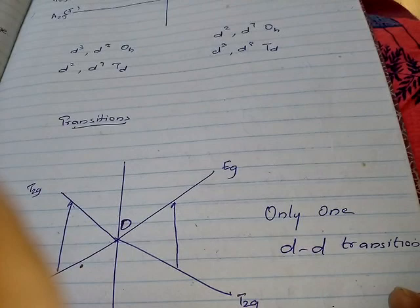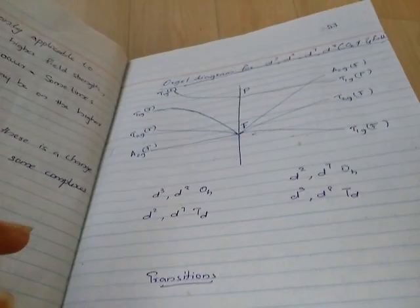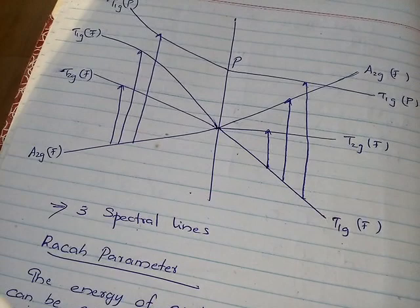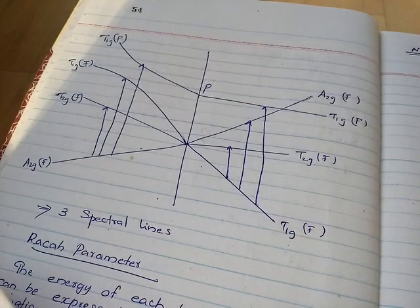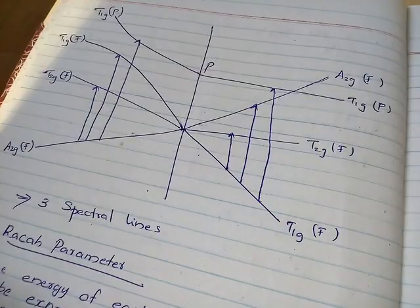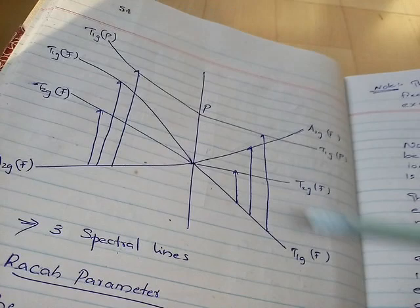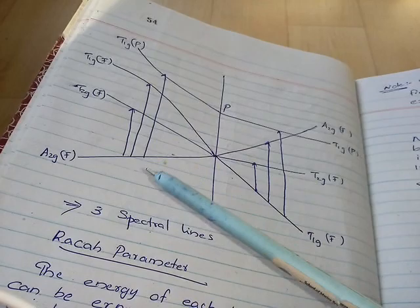In the last class we saw that for D1, D4, D6, D9 configuration there is only one type of DD transition. In this case, three types of transitions occur: from A2G to T2G, then A2G to T1G of P, and A2G to T1G of F — that is three types of transitions occur.